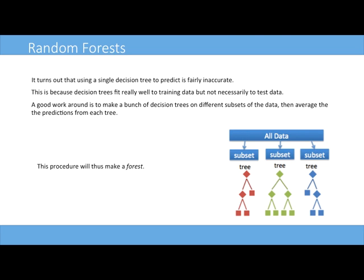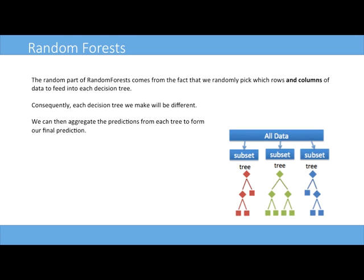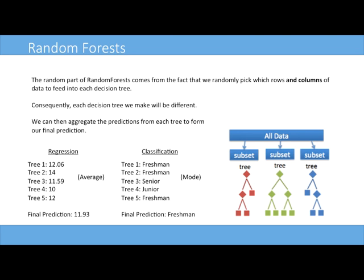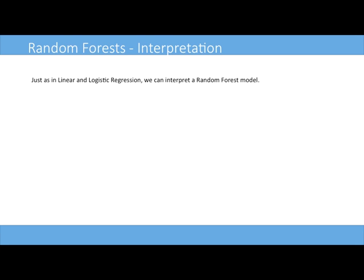What we want to do is take subsets of the rows and subsets of the columns. That way, every single tree we build will be a little bit different, and each tree will be a master in its own data set domain. It'll spit out a decision or prediction. If you have a bunch of predictions, you can aggregate them all together — for regression you can take the average, and for multi-classification problems you can take the mode. Those are two simple and intuitive metrics you can use.